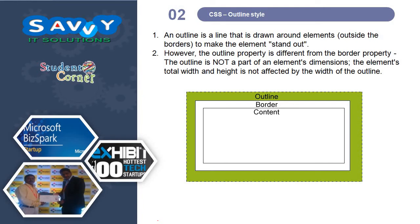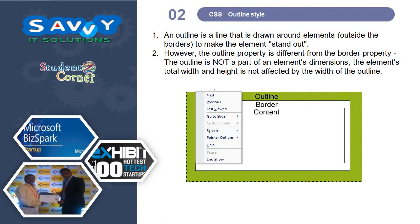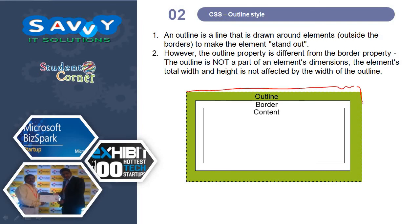Next, outline styles. An outline is a line that is drawn around elements outside the borders to make the element stand out. However, the outline property is different from the border property — the outline is not a part of an element's dimensions. The element's total width and height is not affected by the width of the outline. The content is inside, the border is the line in between, and the outline comes after the border.